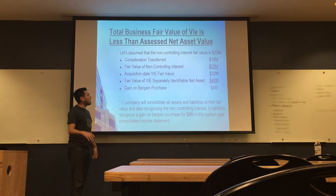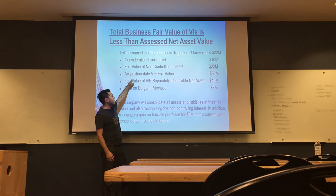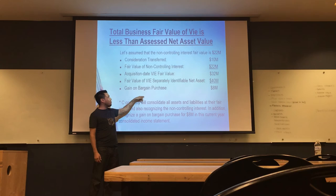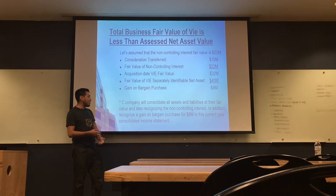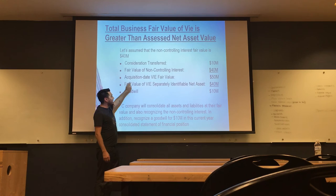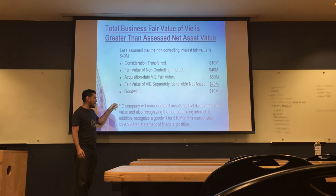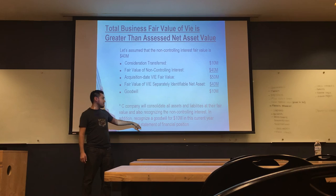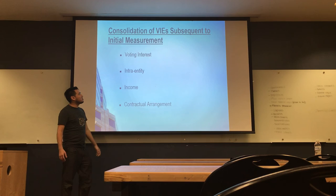In the third case, when the fair value is $40 million, we get goodwill of $10 million. We consolidate assets, liabilities, and non-controlling interest, and that goodwill goes to the consolidated statement of financial position.